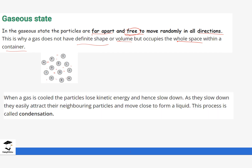Now going in the opposite direction — initially we were heating solid to liquid and then to gas. If we reverse the process and the gas particles are cooled, or we reduce the amount of heat in the system, they lose kinetic energy. Because they lose energy they are not able to move as fast, so they slow down. When they start slowing down, the particles start attracting each other, the forces begin to appear, they move close together, and they finally form a liquid.